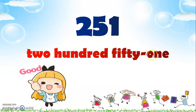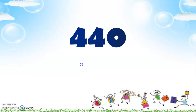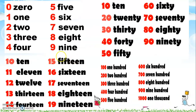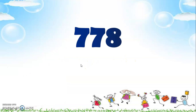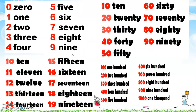Next is 251 — look for 251 on the number chart. The answer is two hundred fifty-one, with a dash between fifty and one. Another one: 440 — look for 440 on the number chart. The answer is four hundred forty.